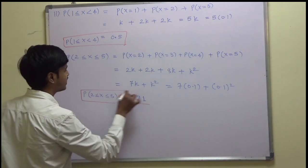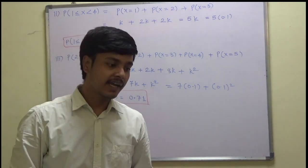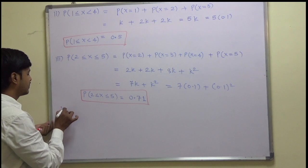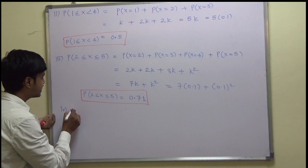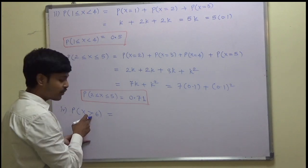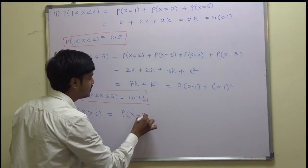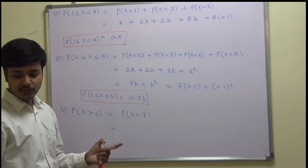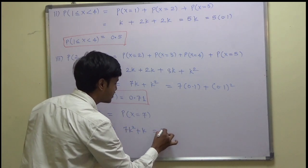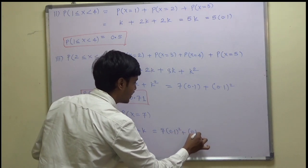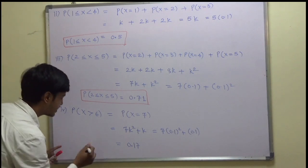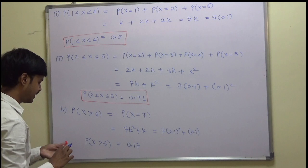For the fourth part, find P(x > 6). Since x > 6 means x = 7 only, we need P(x=7), which is given as 7k² + k. Substituting k = 0.1: 7(0.1)² + 0.1 = 0.07 + 0.1 = 0.17. So P(x > 6) = 0.17.